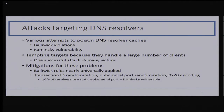Now we have mitigations against these known attacks. For example, the bailiwick rules can protect against authoritative DNS servers returning arbitrary records in responses. Also, transaction ID randomization, ephemeral port randomization, and 0x20 encoding protect against off-path attackers. In a study from two years ago, we found that the bailiwick rules are nearly universally applied now, and most servers are patched for ephemeral port randomization. We still found 16% of resolvers are unpatched, but larger servers tend to be patched, so that 16% accounts for far fewer people. Security against known attacks is looking okay at the shared resolver.